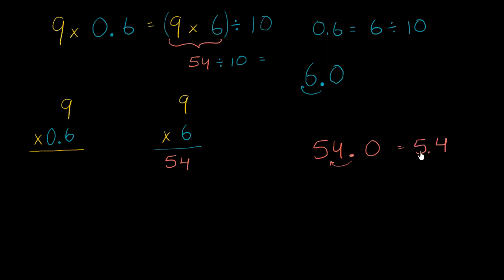And that should make sense to you. 5 times 10 is 50. 0.4 times 10 is 4. So it makes sense that 54 divided by 10 is equal to 5.4. So this right over here is equal to 5.4.